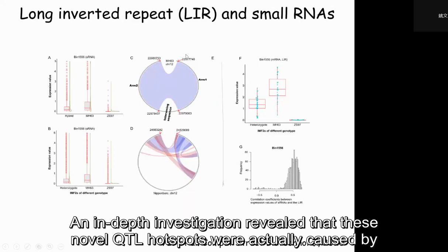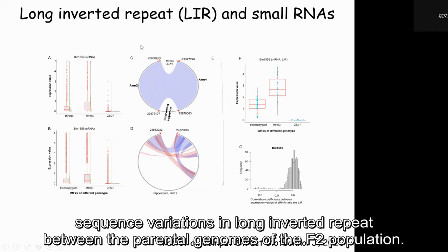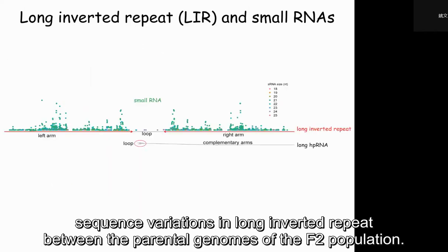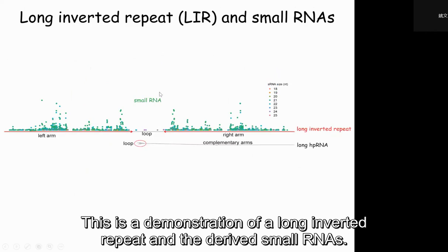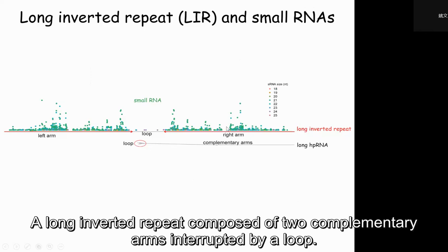An in-depth investigation revealed that these novel locus hotspots were actually caused by sequence variations in non-invalid repeats between the parent genomes of the F2 population. This is a demonstration of non-invalid repeat and derived sRNA. A non-invalid repeat consists of two complementary arms interrupted by a loop.